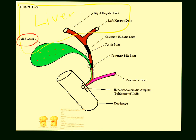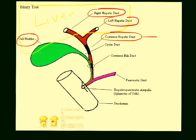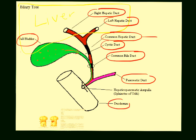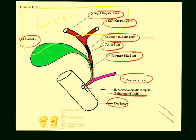There are important ducts in close proximity coming out of the liver. You have the right and left hepatic ducts, which join to form the common hepatic duct. The common hepatic duct and the cystic duct — which comes directly from the gallbladder — join to form the common bile duct. That common bile duct eventually joins with the pancreatic duct and opens into the duodenum through the sphincter. That anatomy is very important to understand.